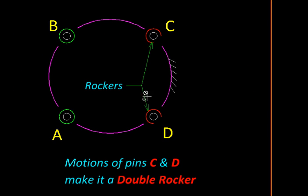Fixing link CD would put our input link as well as output link in contact with a partially rotating revolute pair, and therefore both of them will become a rocker. And then we will get a double rocker mechanism.